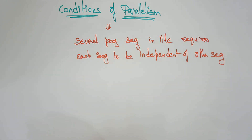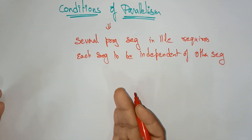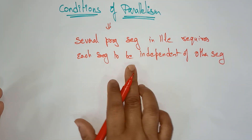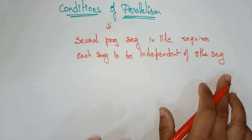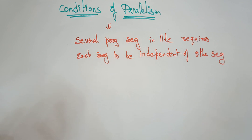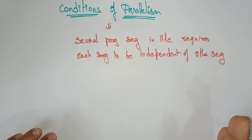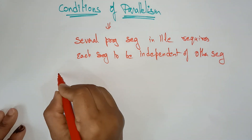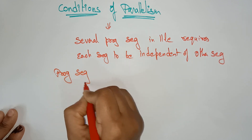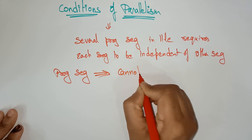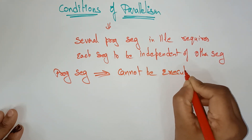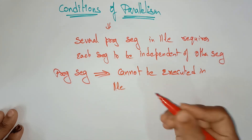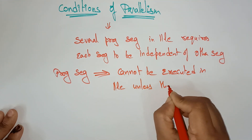If they want to execute using dependency, obviously each segment will be dependent on the other segment. Whenever several program segments want to be executed in parallel, each segment should be independent of the other segment. The program segments cannot be executed in parallel unless they are independent.